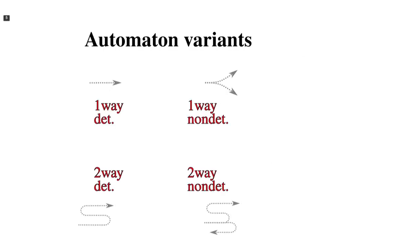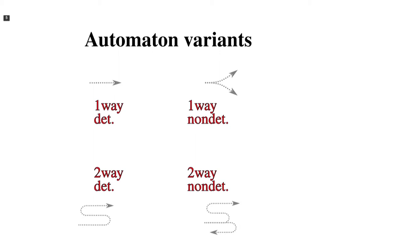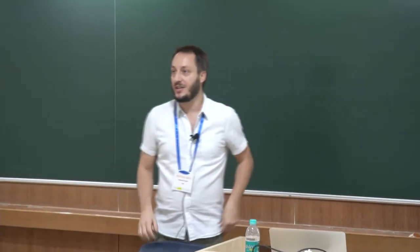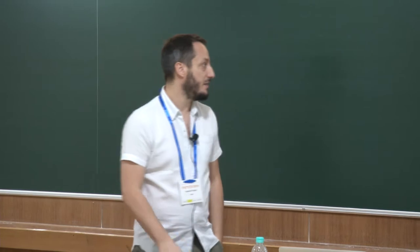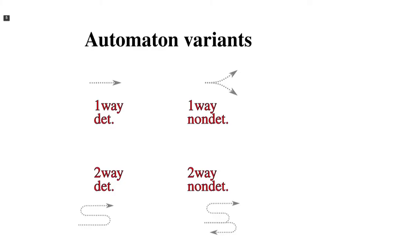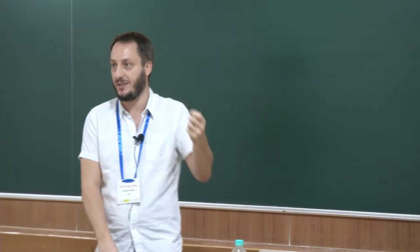In automata theory, you find many nice models. I will mostly use deterministic and non-deterministic variants. There is also the two-way variant, which is perhaps less well known. In the one-way variant, the input head always moves to the right, so you can only visit each position of the input once — that's why we say we consume an input symbol.